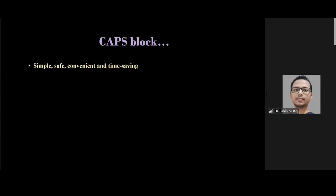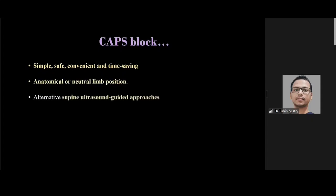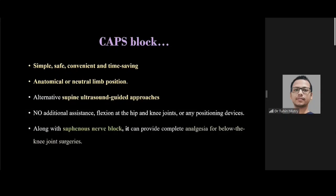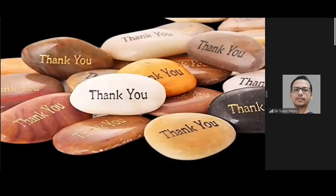To conclude, CAPS block is simple, safe, time-saving, and convenient for both patient and anesthesiologist. It is performed in anatomical or neutral limb position with no external help required. It is different from already described ultrasound-guided supine popliteal sciatic nerve block approaches — no additional assistance, flexion at hip or knee joints, or special positional devices are required. Along with the saphenous nerve block, it can provide complete analgesia for below-knee surgeries. Thank you all for your patient listening.